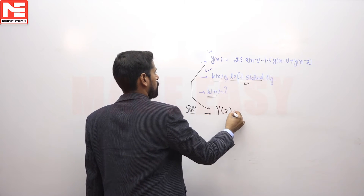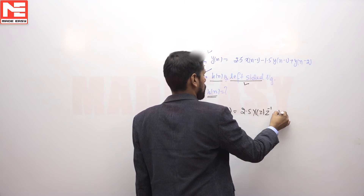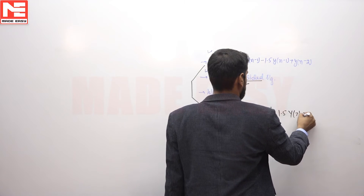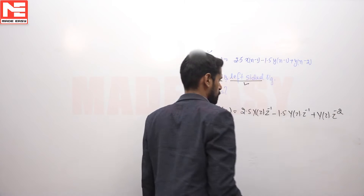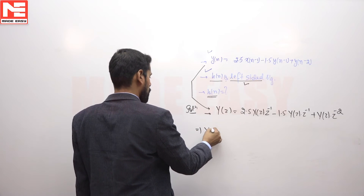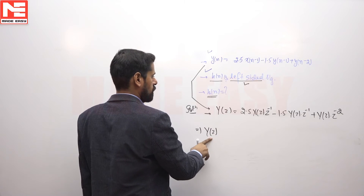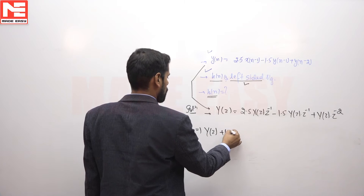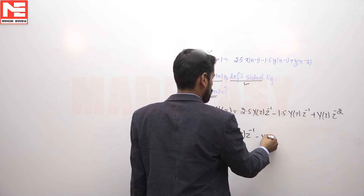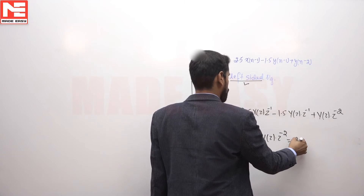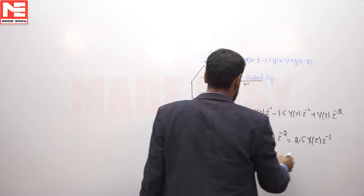We can write Y(z) = 2.5·X(z)·z⁻¹ − 1.5·Y(z)·z⁻¹ + Y(z)·z⁻². By collecting terms of Y(z) on the left-hand side: Y(z) + 1.5·Y(z)·z⁻¹ − Y(z)·z⁻² = 2.5·X(z)·z⁻¹.